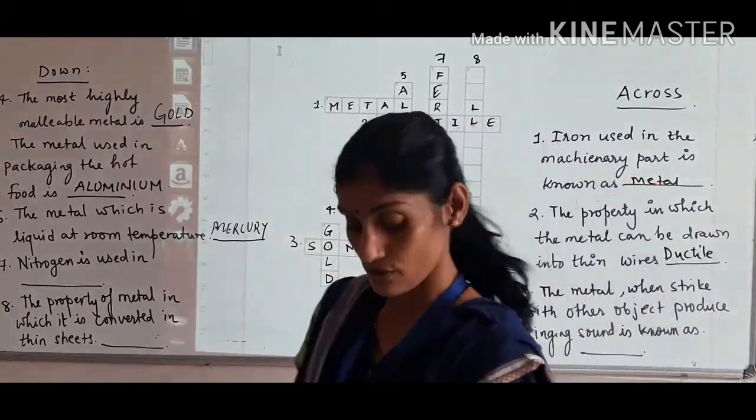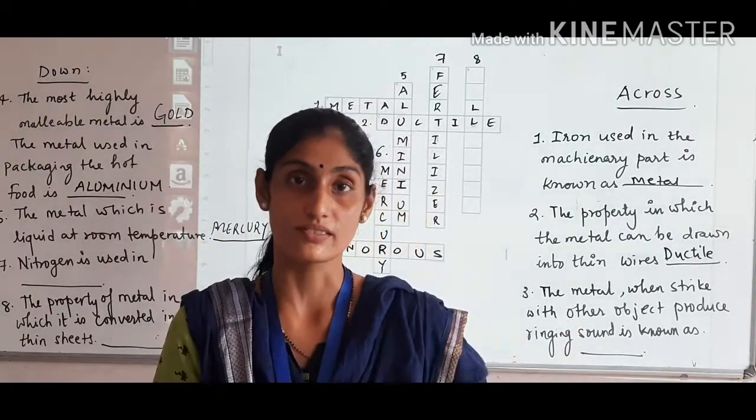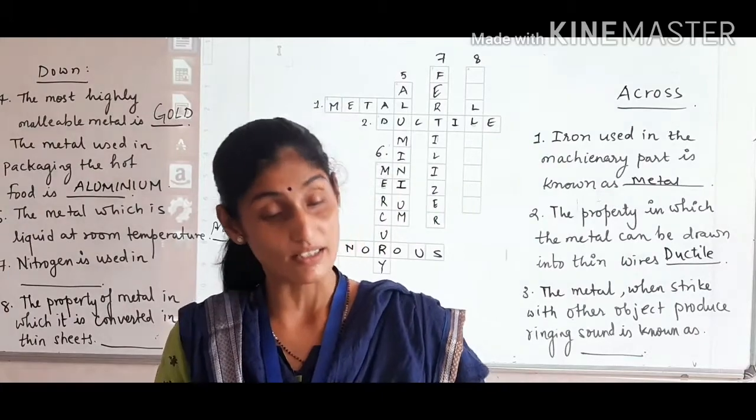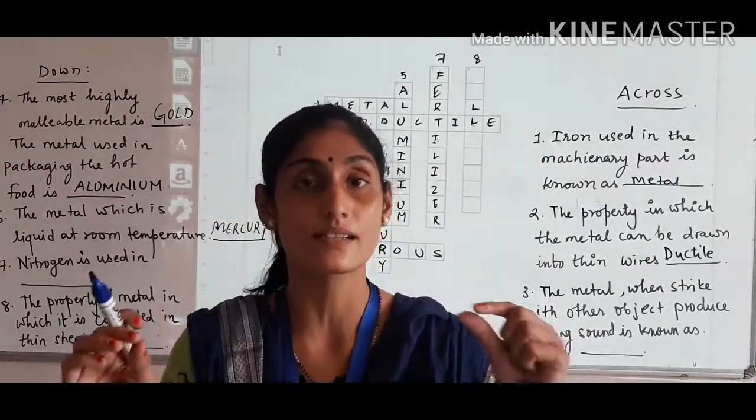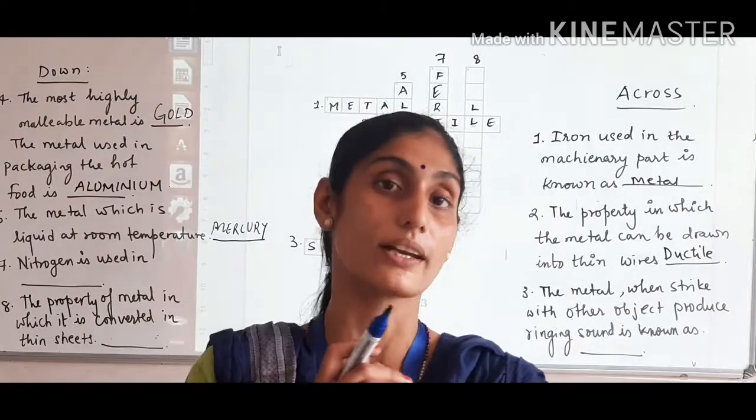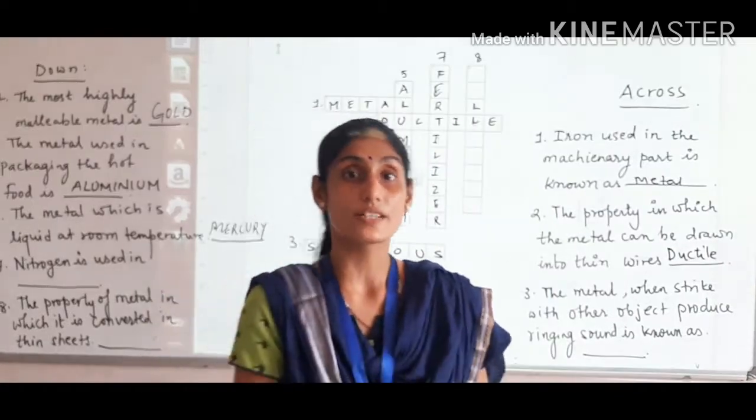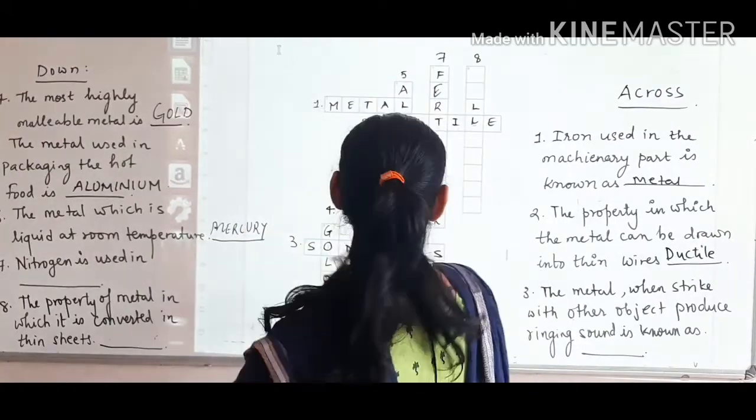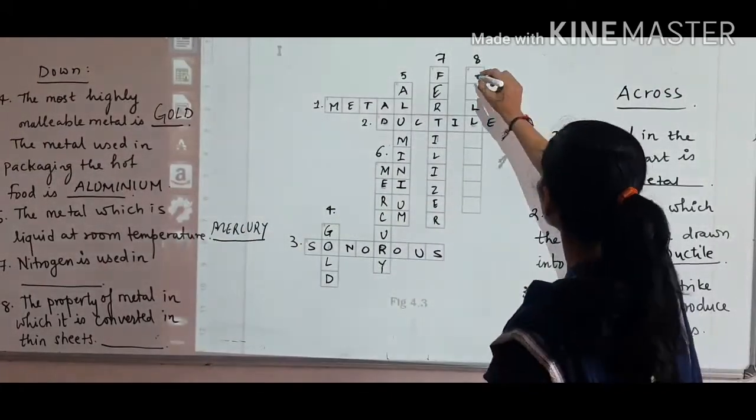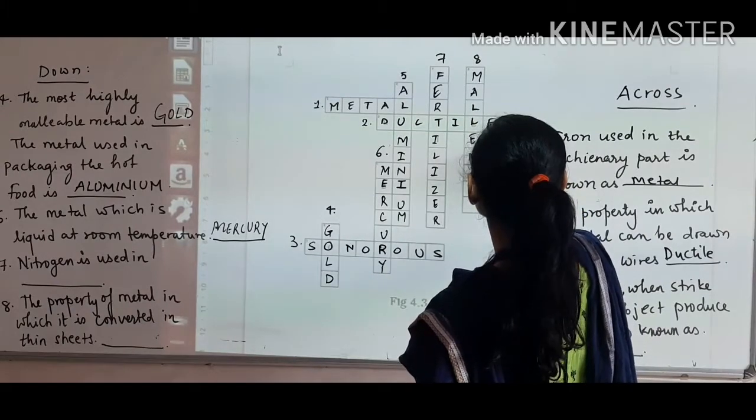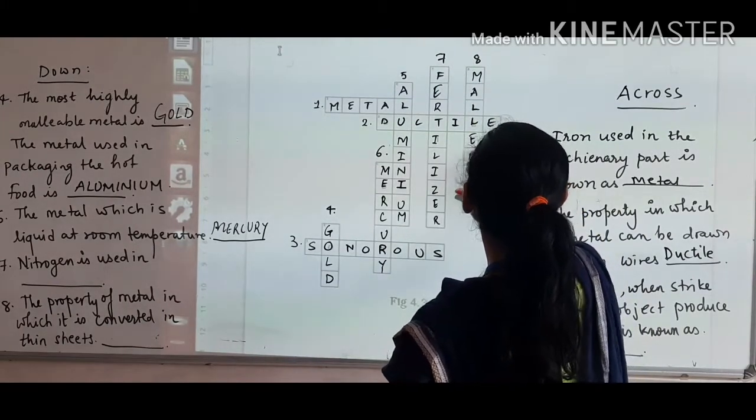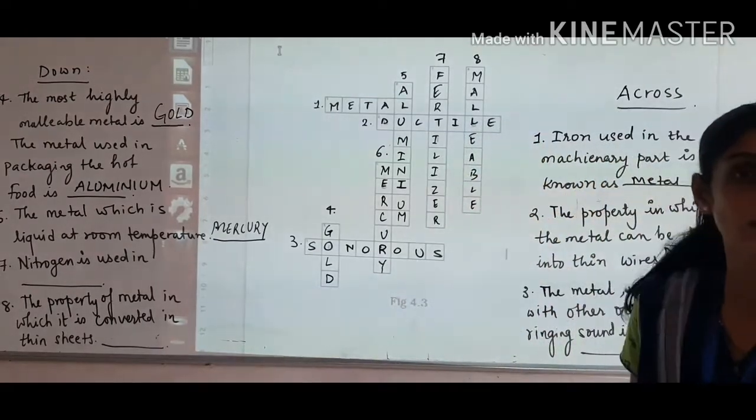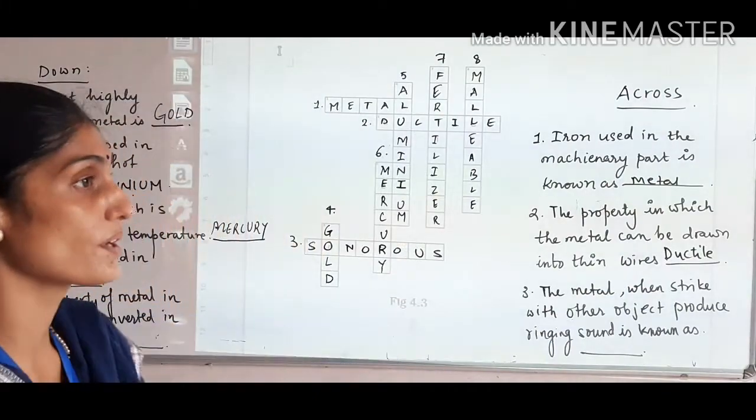Last but not least, the property of metal in which metal is converted into thin sheets. The property of metal in which metal is converted into thin sheets is known as malleability. Metals are malleable. Okay?